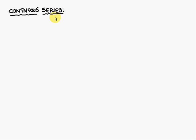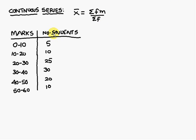The third model problem in arithmetic mean is the continuous series. You can identify this type of problem when class intervals are given, such as 0–10, 10–20, 20–30, 30–40, 40–50, and 50–60. Along with these intervals, the number of students (frequency) is also given. The formula for continuous series is x̄ = ΣFM / ΣF.